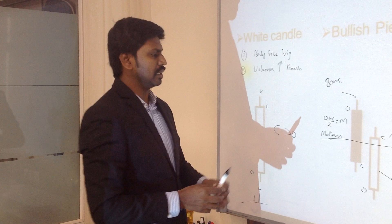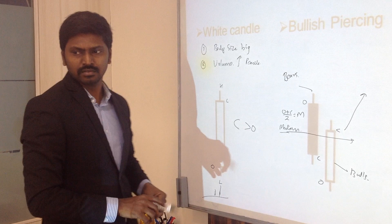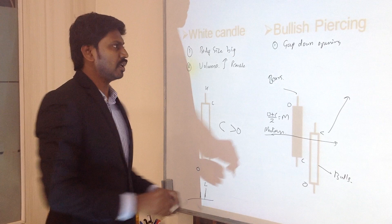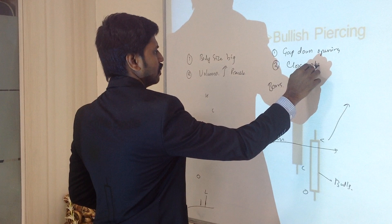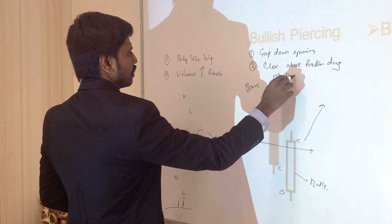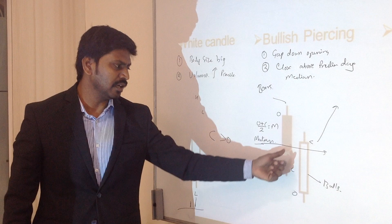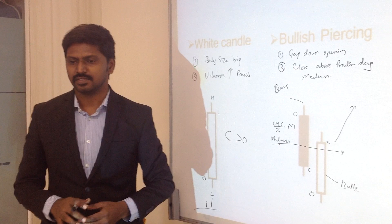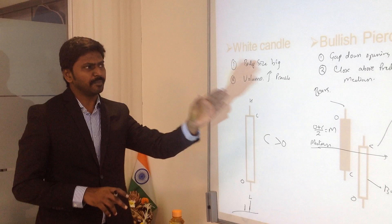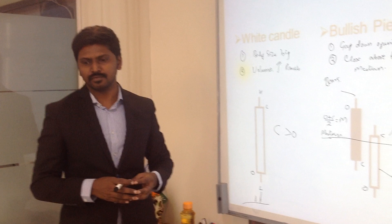The third pattern is bullish engulfing. The same gap-down opening scenario applies: on Monday the market was negative, and on Tuesday the market opens with a gap down, even below the previous day's closing. The close should be above the previous day's open. When the market opens below the previous day's low and then moves strongly upward, that is bullish engulfing.